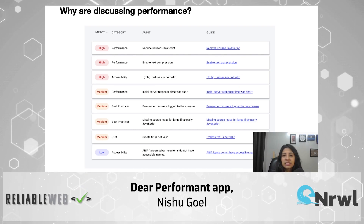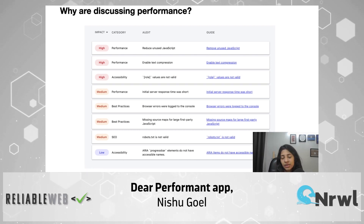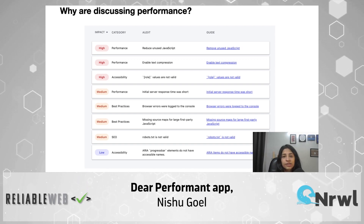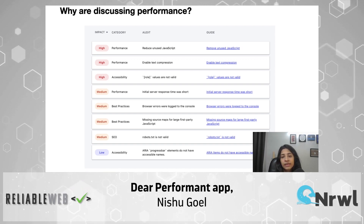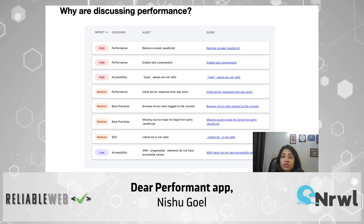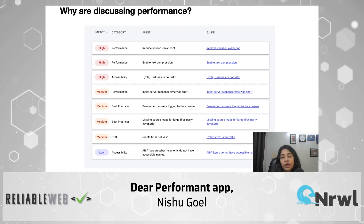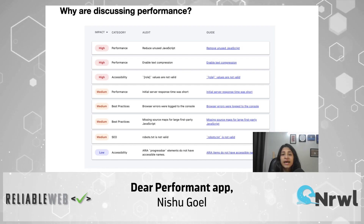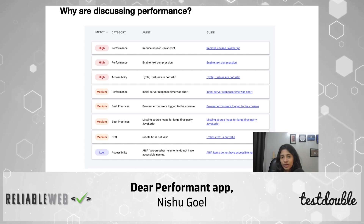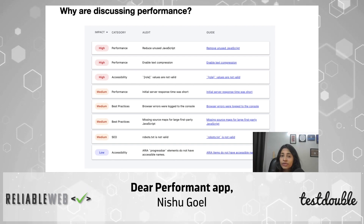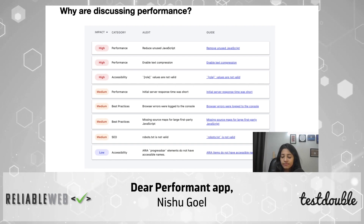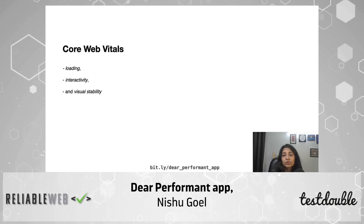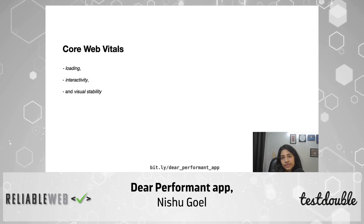web.dev also gives you references to guides that could help you solve those issues. For example, it could be some unused JavaScript in your application that's blocking your render time. It could be some accessibility roles that you're not using properly. It could be some extra opportunities like adding code splitting in your application or inlining some fonts for CSS. These are all things we are going to look at today and try to improve, broken into different categories.